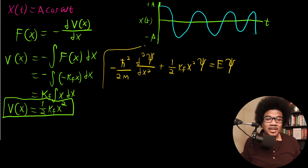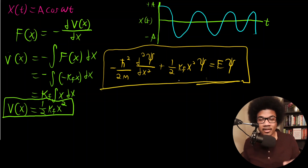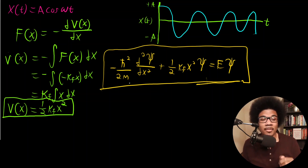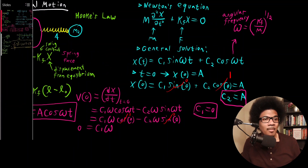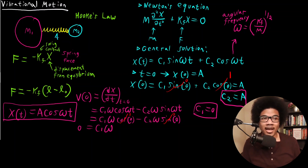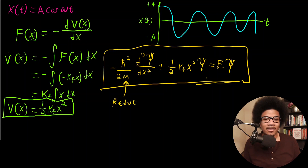The next video will cover what we mean by mass, because the mass in this equation is not just any one particular mass — it's the mass of the oscillator as a whole. The way we account for that is using something called the reduced mass, and that's what we'll look at in the next video.